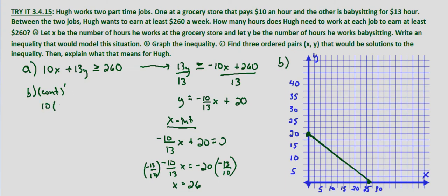Well, that's 0 is greater than or equal to 260, so that's false. So we want to shade on the opposite side, which would be above here.